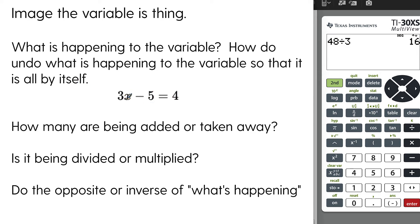For the two-step equation 3x minus 5 equals 4, think about what's happening to x. Is anything being added or taken away? Yes — we're subtracting 5, so we do the opposite and add 5. Next, is x being multiplied or divided? This represents 3 times x, so the opposite is to divide by 3 to isolate the variable. I abbreviate this as H (happening) and O (opposite).